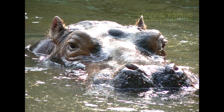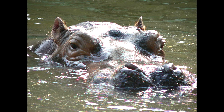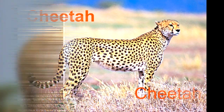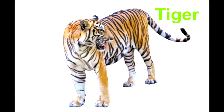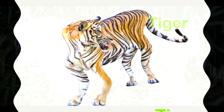Hippos live near rivers and lakes. Who is the next wild animal? It's a cheetah! Cheetah has long legs and they can run very fast. Who is next? It's a tiger! Tiger looks like a big cat.